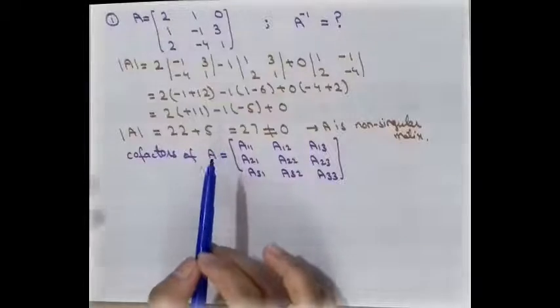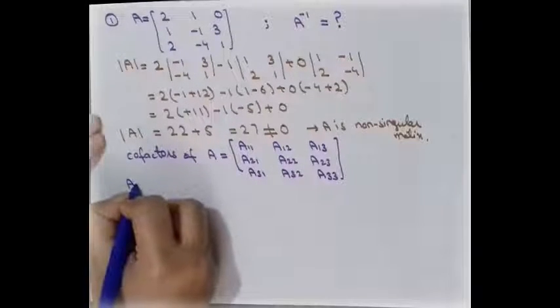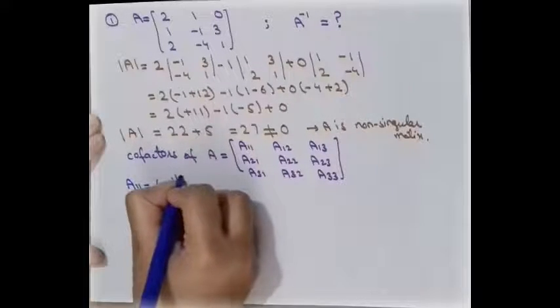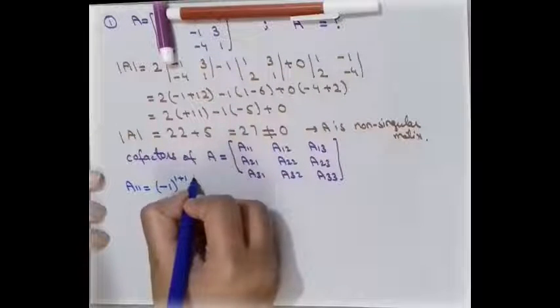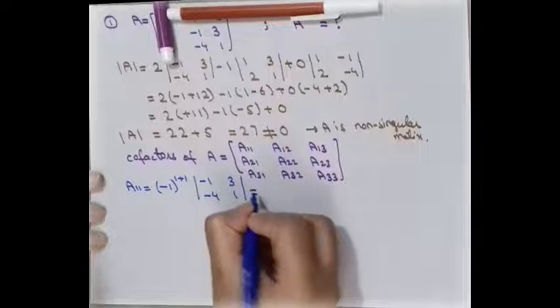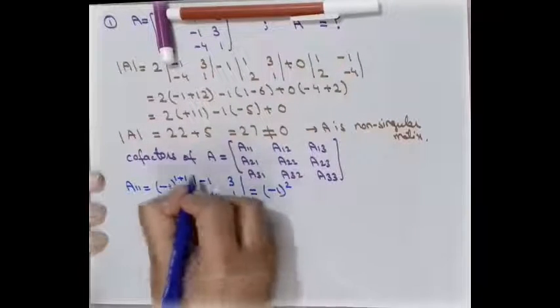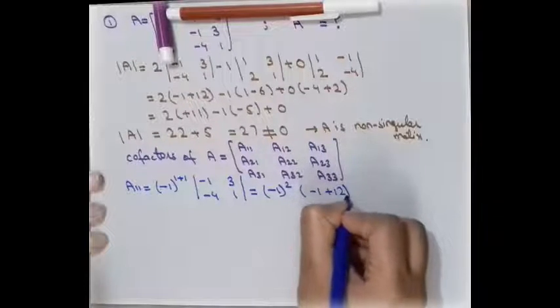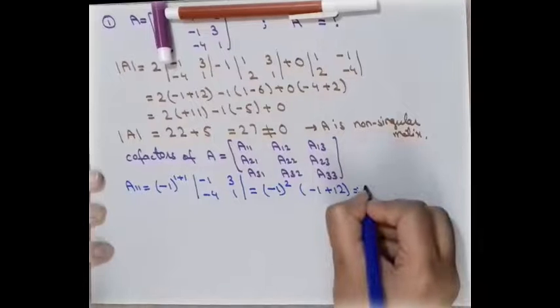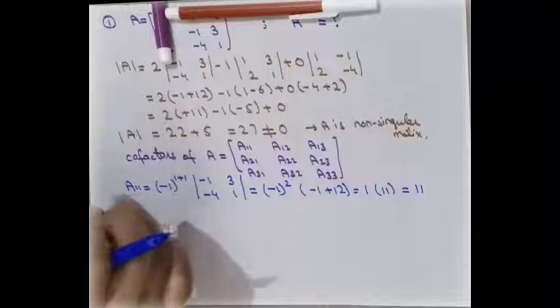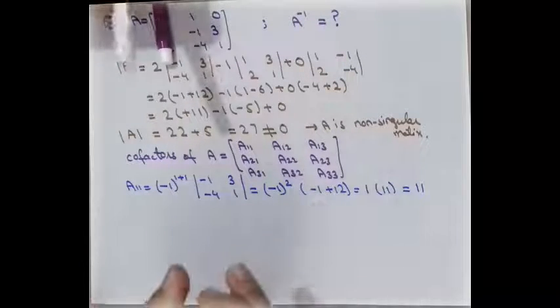Using the co-factor formula (-1)^(i+j), for A11 with i+j = 1+1 = 2, we remove the first row and column, leaving four elements: -1, 3, -4, 1. Calculating the determinant: (-1)^2 × (-1 + 12) = 1 × 11 = 11. So the first co-factor A11 = 11.